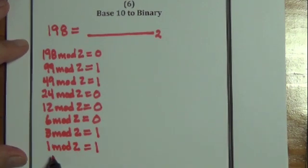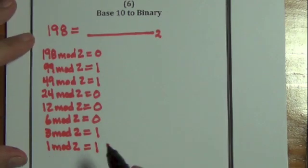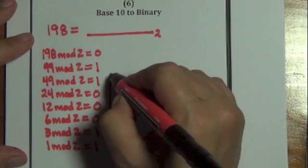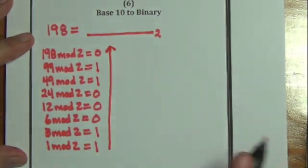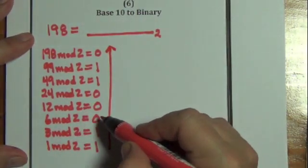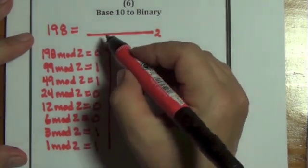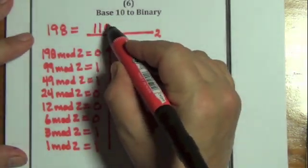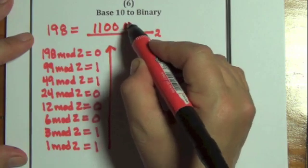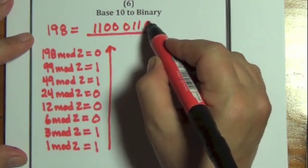2 goes into 1 0 times. And we write the number in reverse order. So in reverse order we have 1 1 0 0 0 1 1 0.